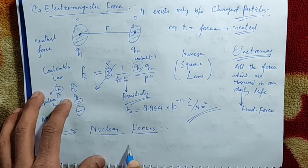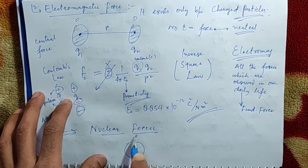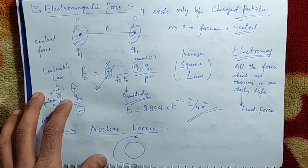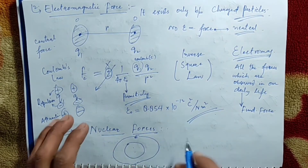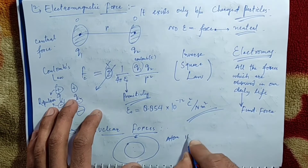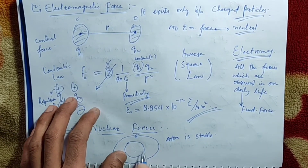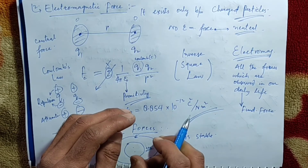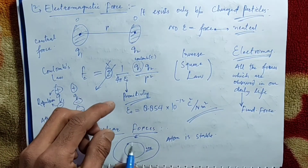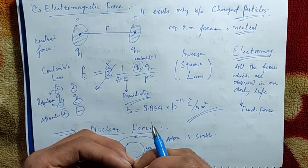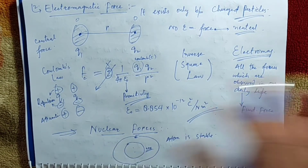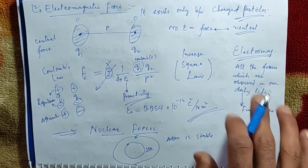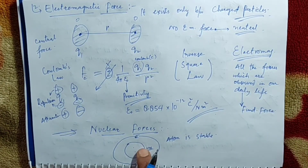For example, take an atom. This is an atomic nucleus and around it there is an electron revolving. The atom is a stable particle. Since the nucleus is positively charged and the electron is negatively charged, there must be a force of attraction giving rise to centripetal force around the nucleus — concepts also addressed in quantum mechanics by Planck, Bohr, Rutherford, and others. So the electromagnetic force must exist here.